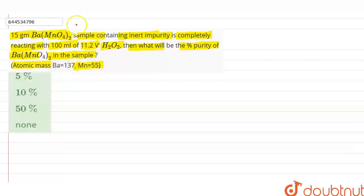Okay, so we know that normality of H2O2 is normality of H2O2 will be 11.2 divided by 5.6 normal.